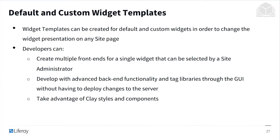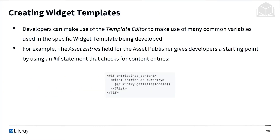Developers can also take advantage of Clay styles and components. When creating widget templates, they can use a template editor to make use of many common variables used in the specific widget template being developed. This gives the developer a lot of power to use things that might conventionally be found in the backend, but have already been built into the templating language. For example, the asset entries field for the asset publisher gives developers a starting point using an if statement that checks for a content entry — if entries has content, this is no longer something you have to fetch from the backend, but is available directly from the editor itself.